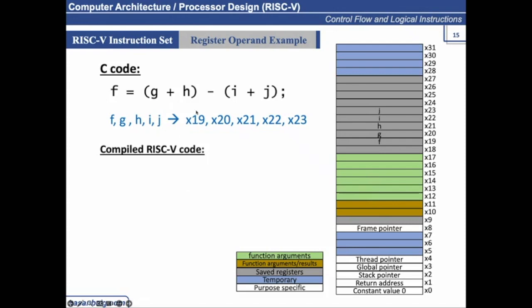G and H has to be added. So G and H, so what two operands you will be adding? So G is stored in where? X20. And H is in X21. So X20, X21, and what is the destination register? It would be any of the temporary registers. So here in this example, it would be X5. So X5, so X20 plus X21.